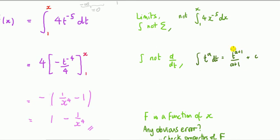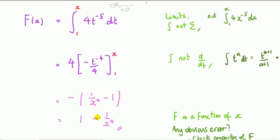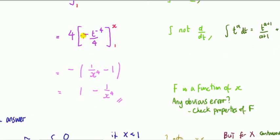I take out the common factor of minus one quarter. The fours cancel. Then I substitute t equals x and t equals one into the result. The most common problem in homework is handling the minus sign through the brackets: minus minus one gives a plus one. So the final expression for the CDF when x is greater than one is one minus one over x to the fourth.